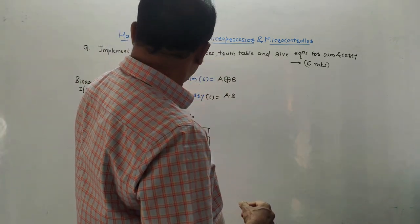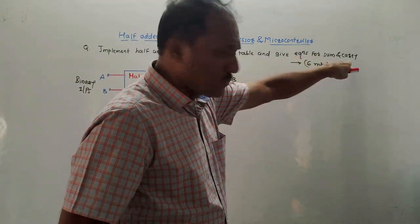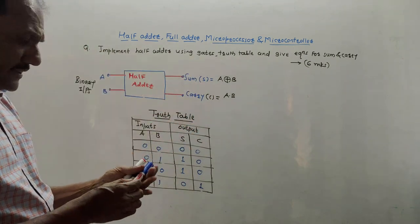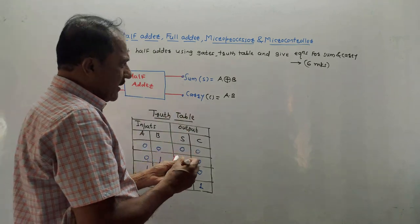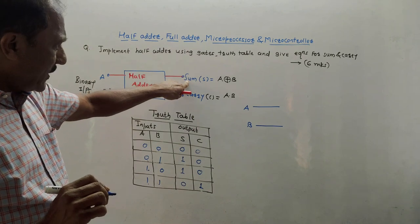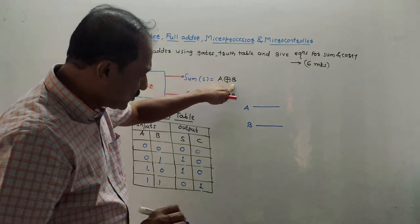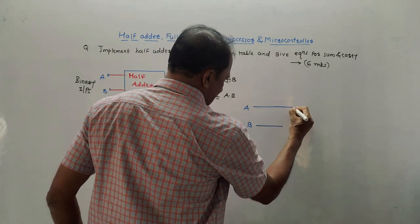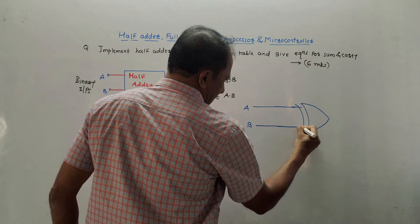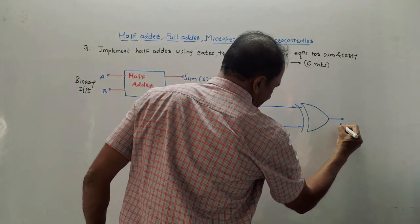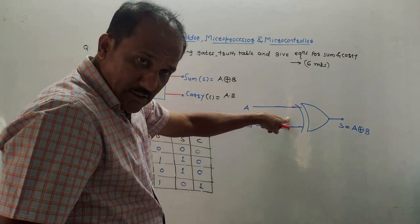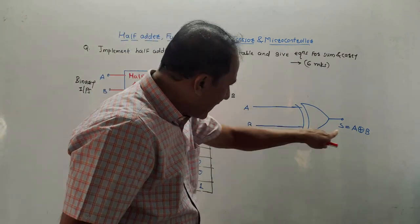The half adder is also asked to be implemented using logic gates with equations for sum and carry. There are two inputs A and B. To generate sum, the equation is A XOR B, so I apply A and B to an XOR gate. The output of this XOR gate is S, and its equation is A XOR B. This XOR gate generates the XOR addition of A and B, producing sum S.